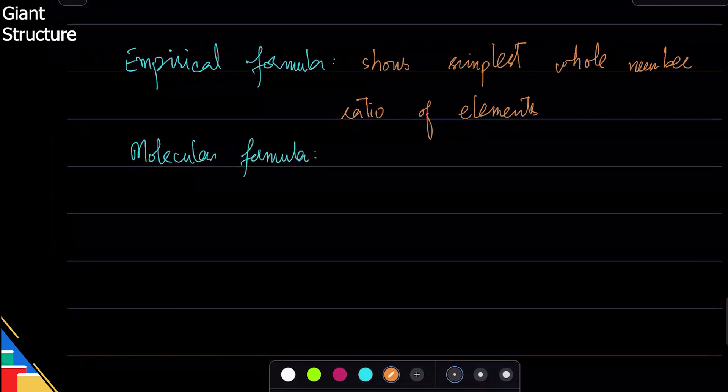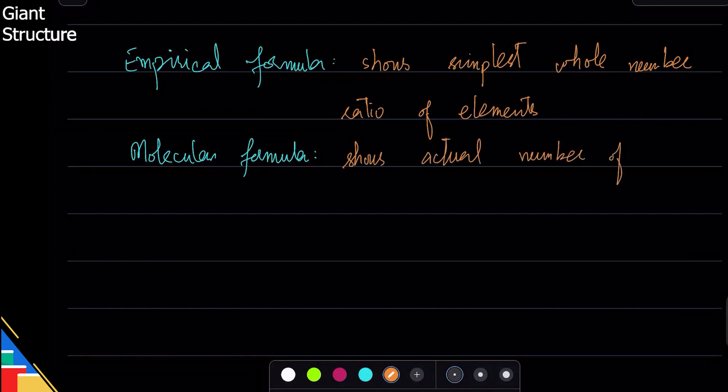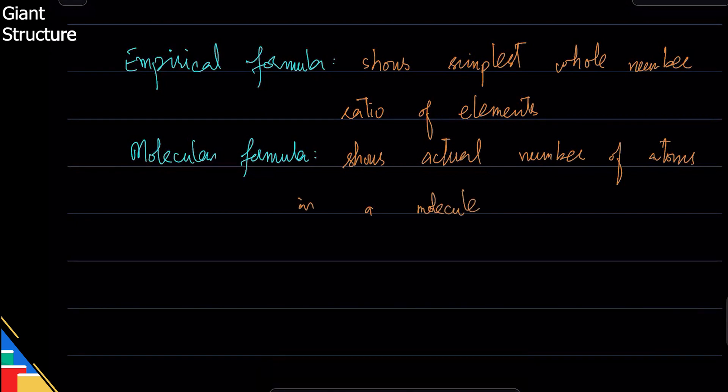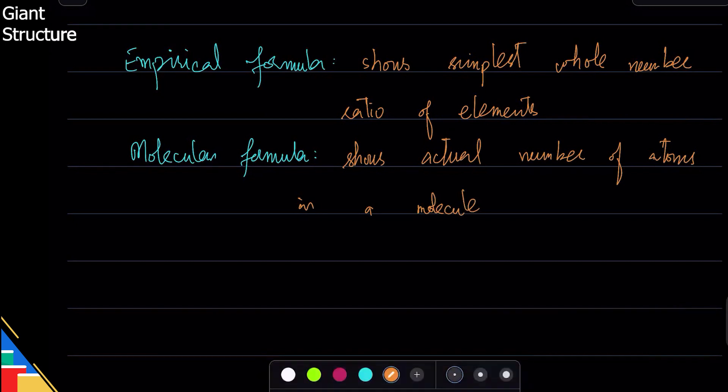Molecular formula gives you the actual number—it shows actual number of atoms in a molecule. So there's a difference in them. Empirical formula only gives you that ratio. All giant structures will have empirical formula, and molecular structures will have both.